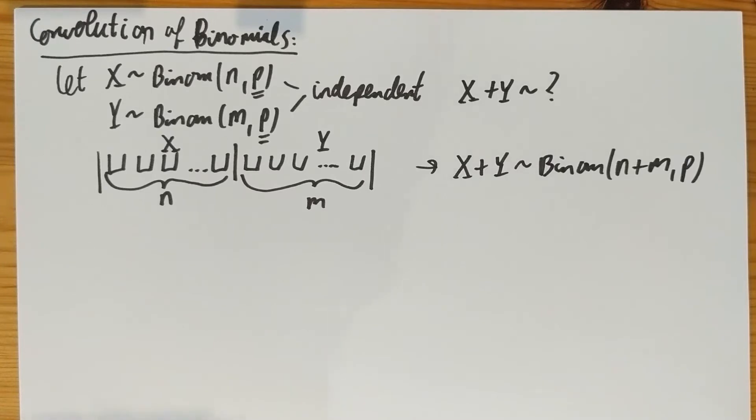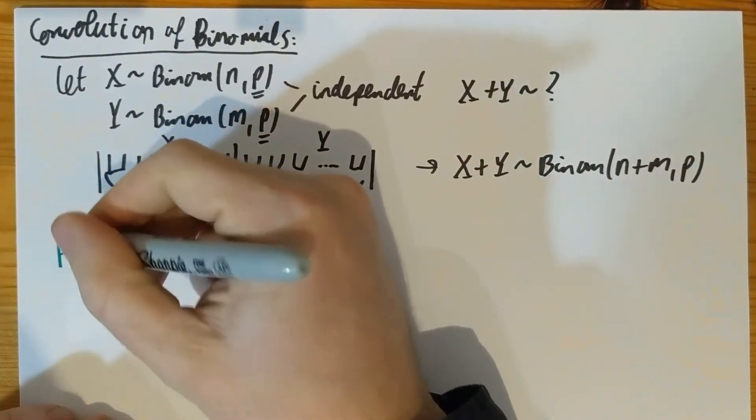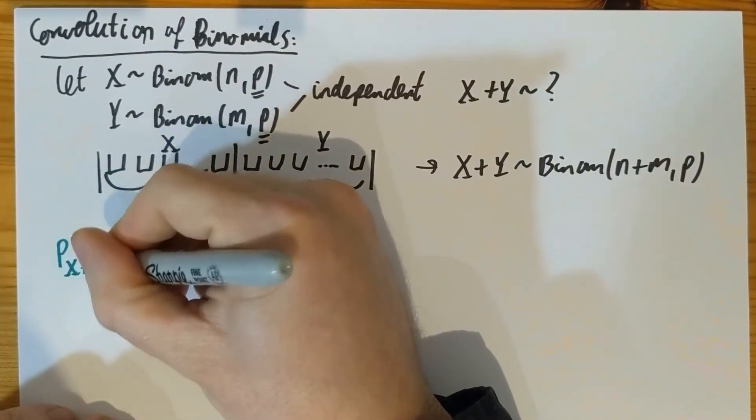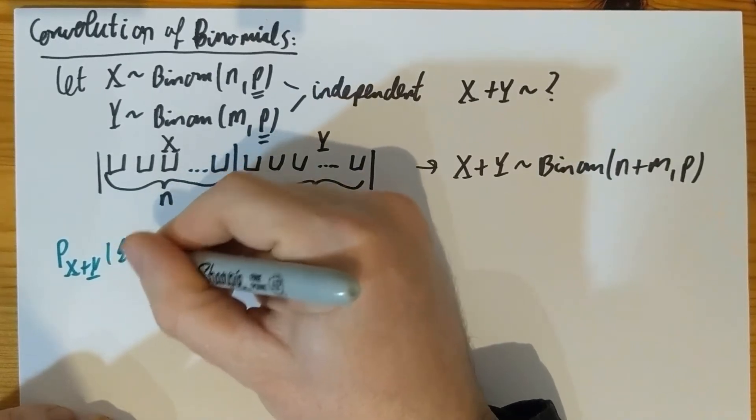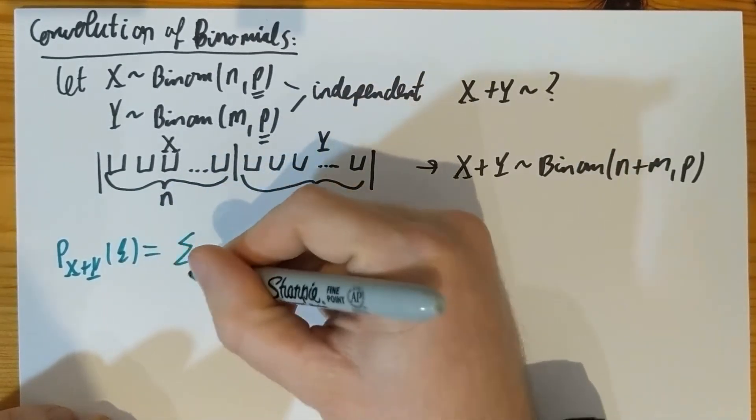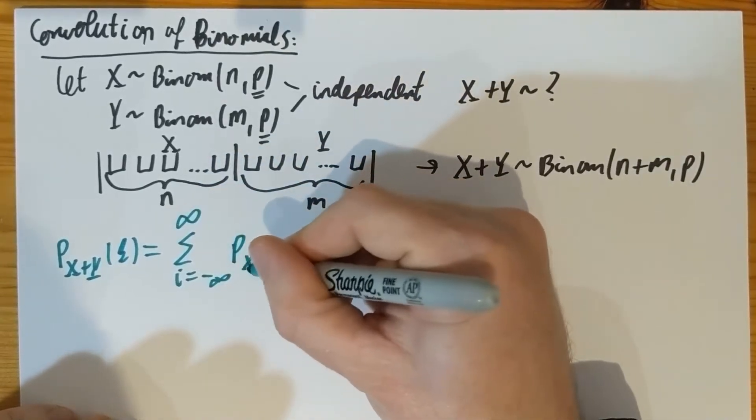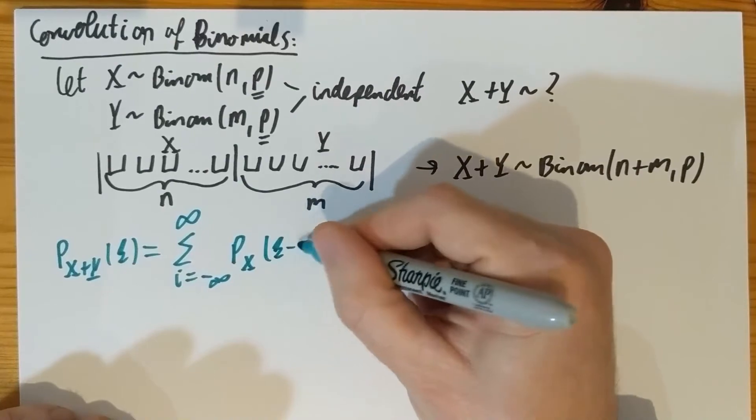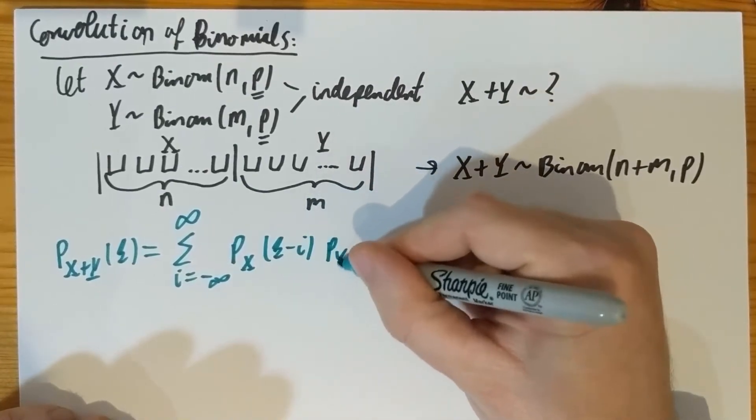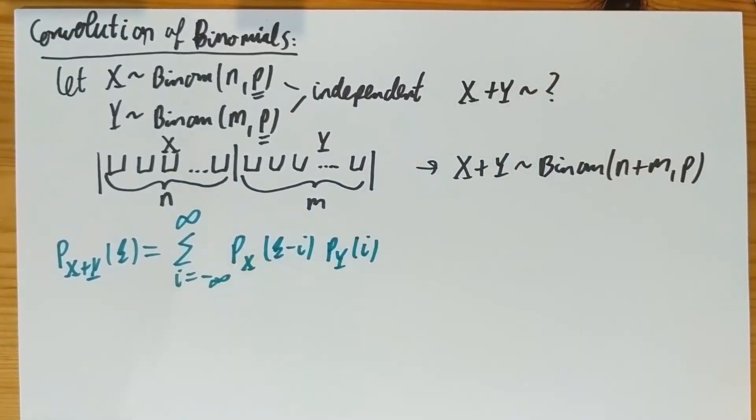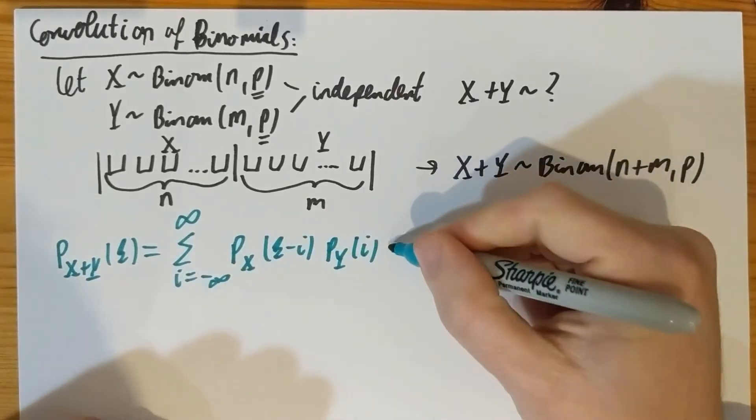Let's actually show that this holds by writing up the formulas. So the mass function of X plus Y at K is going to be the infinite sum for I, the mass function of X at K minus I and the mass function of Y at I. And this comes from the previous video. You break up things according to the value of Y, Y equals I. If Y is I, then X has to be K minus I so that the sum is K.